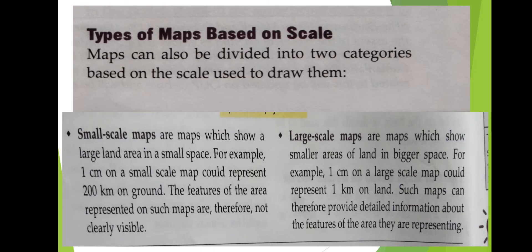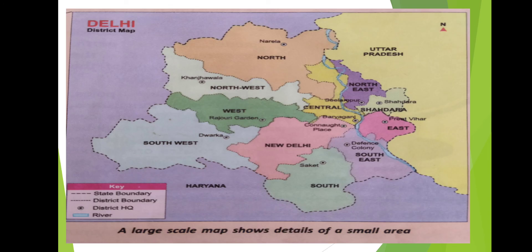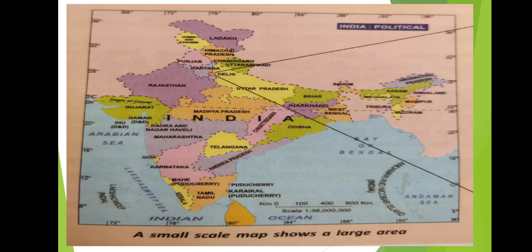Coming to the types of maps based on scale — maps can also be divided into two categories based on the scale used to draw them. First, small scale maps: small scale maps show a large land area in a small space. For example, one centimeter on a small scale map could represent 200 kilometers on the ground. However, in small scale maps the information is not clearly visible — only some general information can be obtained. You can see that India's small scale map shows a large area.